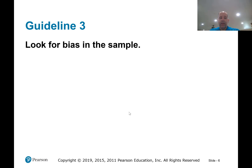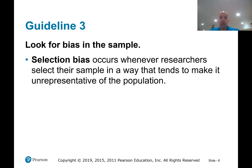Guideline number three: look for bias in the sample. Selection bias occurs whenever researchers select their sample in a way that tends to make it unrepresentative of the population. Most of the sampling processes we've talked about will result in a representative sample, but convenient sampling sometimes will not — it tends not to. So we want to make sure we look for selection bias.